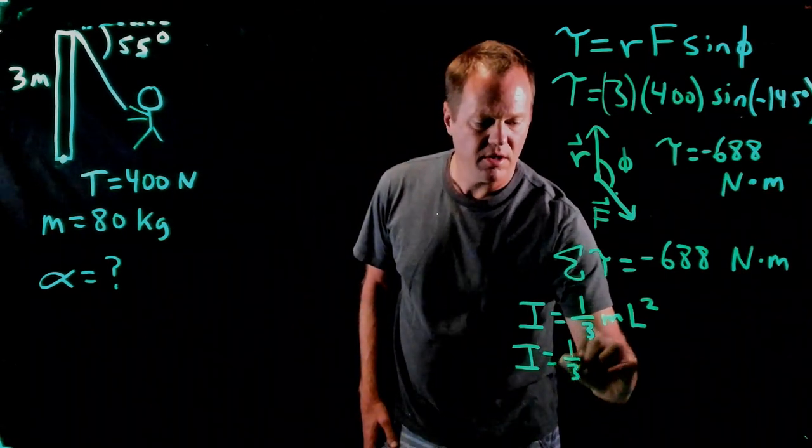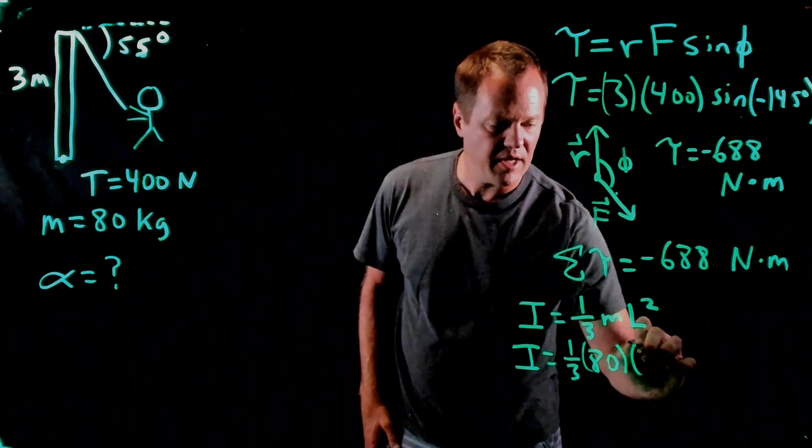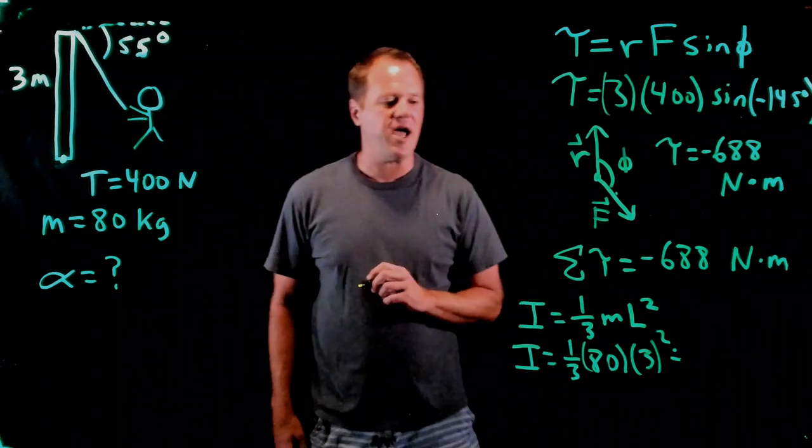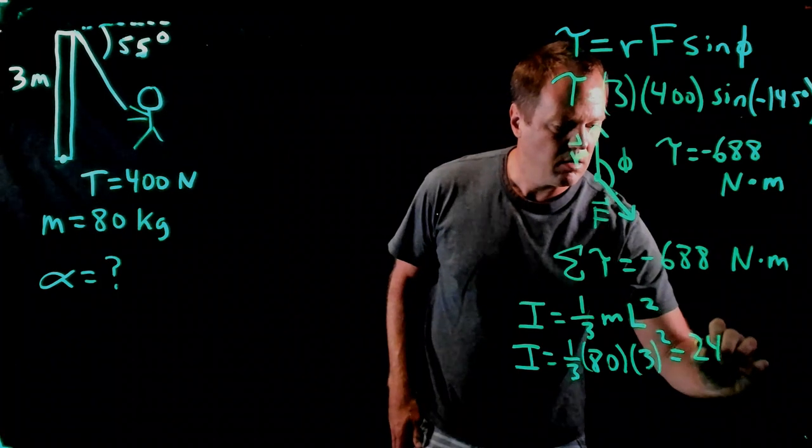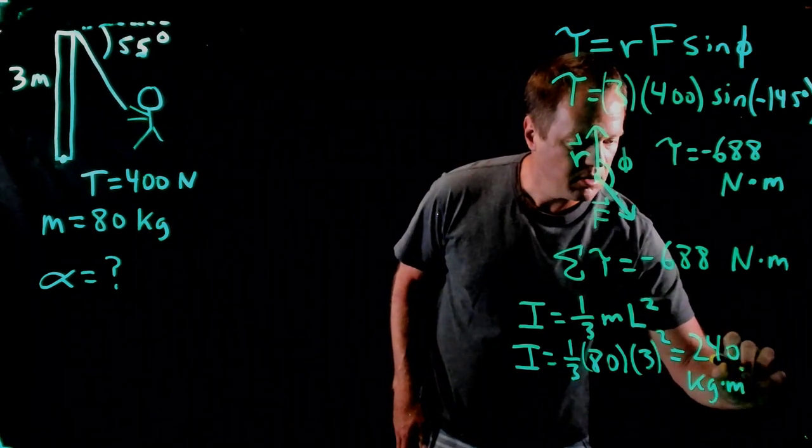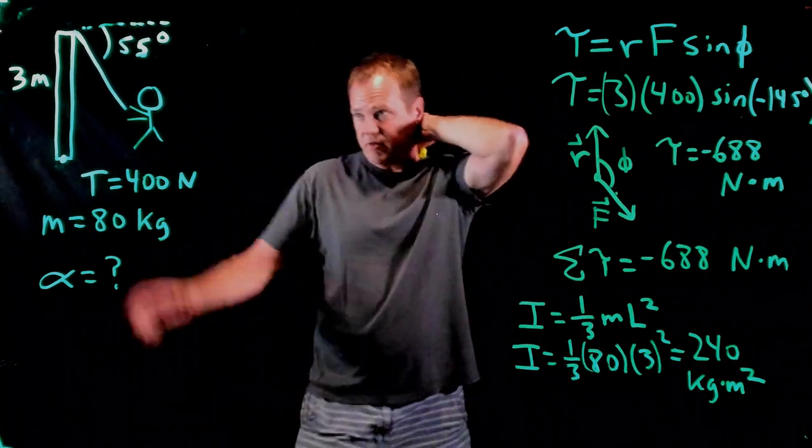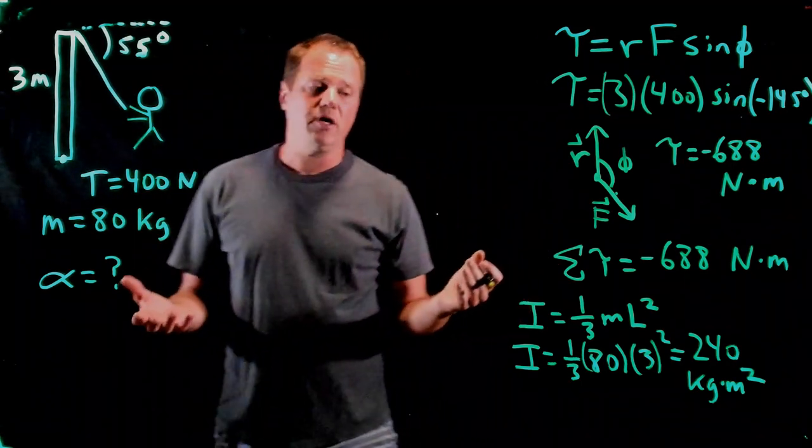So it'll be one third times the mass of 80 kilograms times the length of three. And you might be able to do this one in your head. It is 240 kilogram meters squared. So that's the moment of inertia for this particular object. And now we can use the rotational analog to Newton's second law.